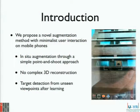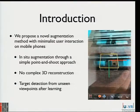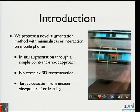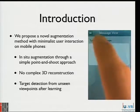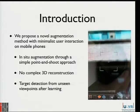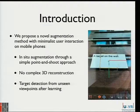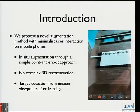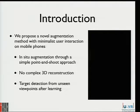We propose an augmentation method with minimalist user interaction, which is a very simple point-and-shoot approach. This video shows the overall overview of my method. When users take a shot with a mobile phone camera, the target object can be detected without any difficult interaction. Users can then add virtual augmentation on target objects. The advantage of this method is it is very simple and doesn't require any complex 3D reconstruction of the scene. Users can also detect the target object from different viewpoints.